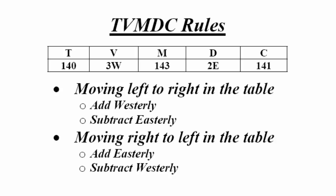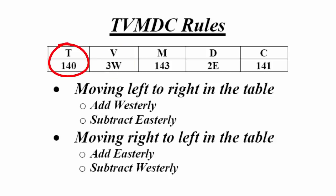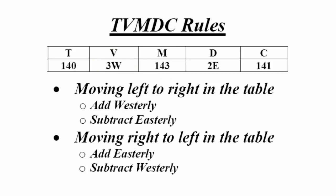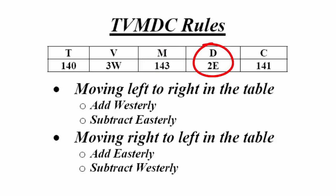For example, with the numbers shown here, to convert true to magnetic — left to right in the table — add the 3 west variation to the 140 true as follows: 140 true plus 3 west equals 143 magnetic. And to convert magnetic to compass, also left to right, subtract the 2 east deviation from the 143 magnetic as follows: 143 magnetic minus 2 east equals 141 compass.